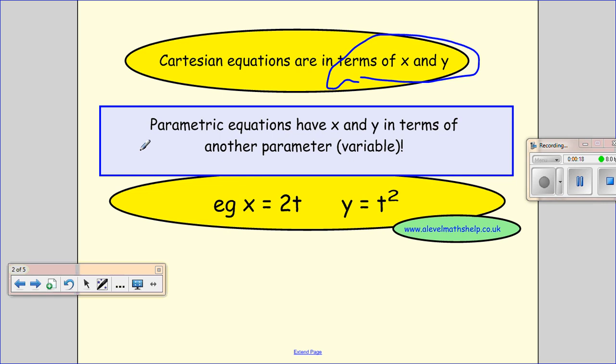And the parametric equations are two separate equations where you have x and y in different equations in terms of another variable. So you see here I have x in terms of t and y in terms of t.